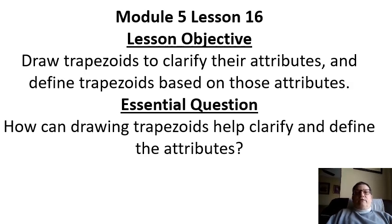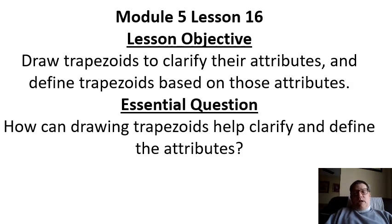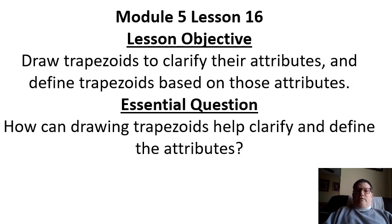Module 5, Lesson 16. Lesson Objective: Draw Trapezoids to Clarify Their Attributes and Define Trapezoids Based on Their Attributes. Essential Question: How Can Drawing Trapezoids Help Clarify and Define the Attributes? Now, we're not going to be drawing them during this video, but when you come to class you will. And I'm hoping drawing them is going to help you really be able to identify each one of these figures based on the properties or attributes they have.